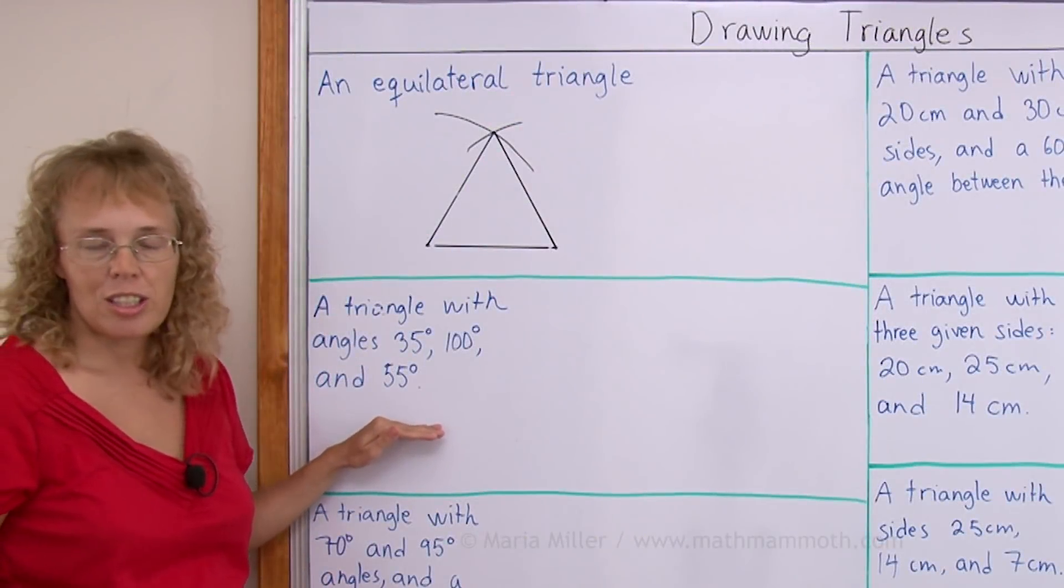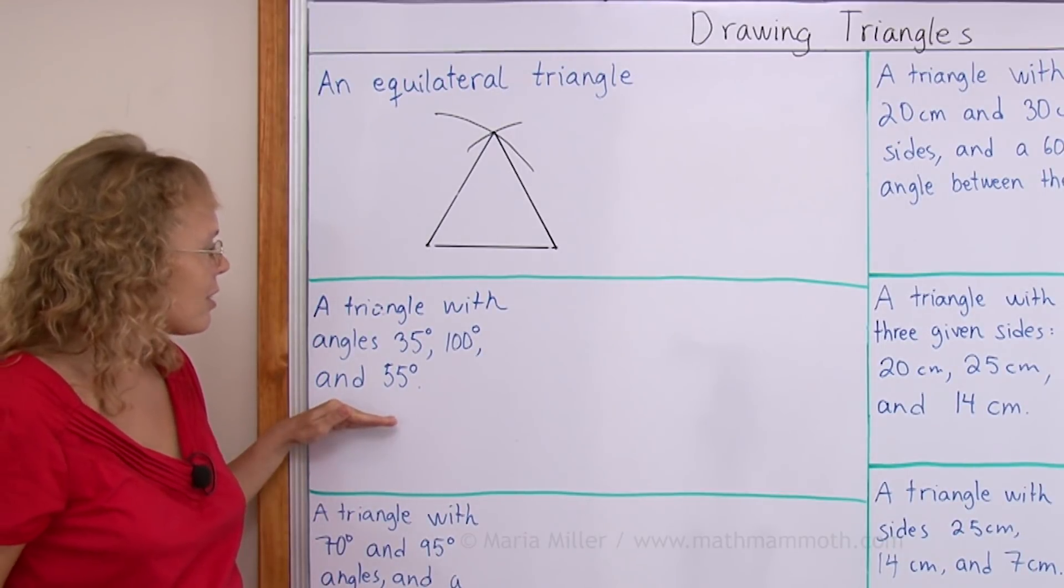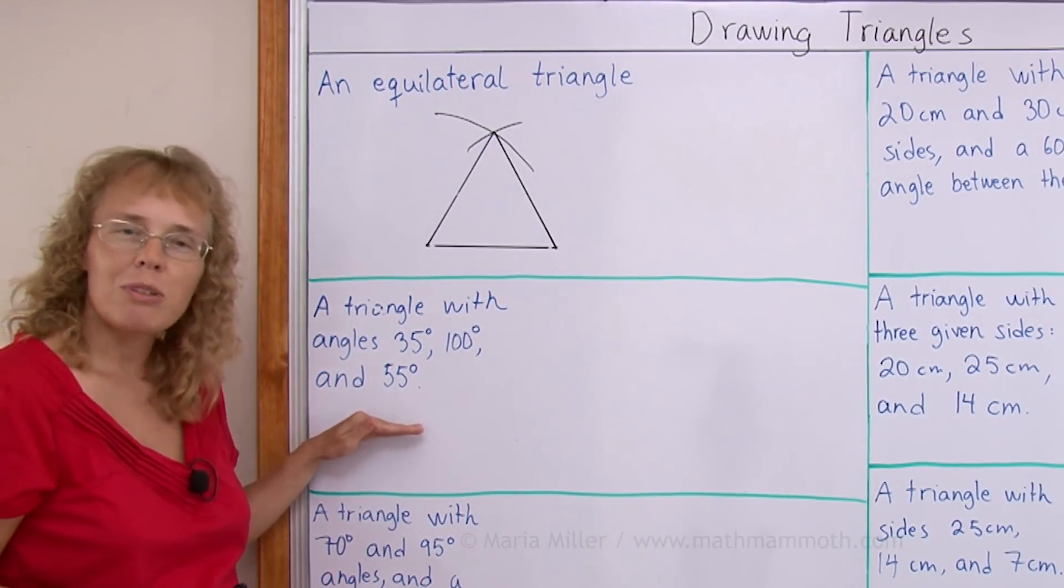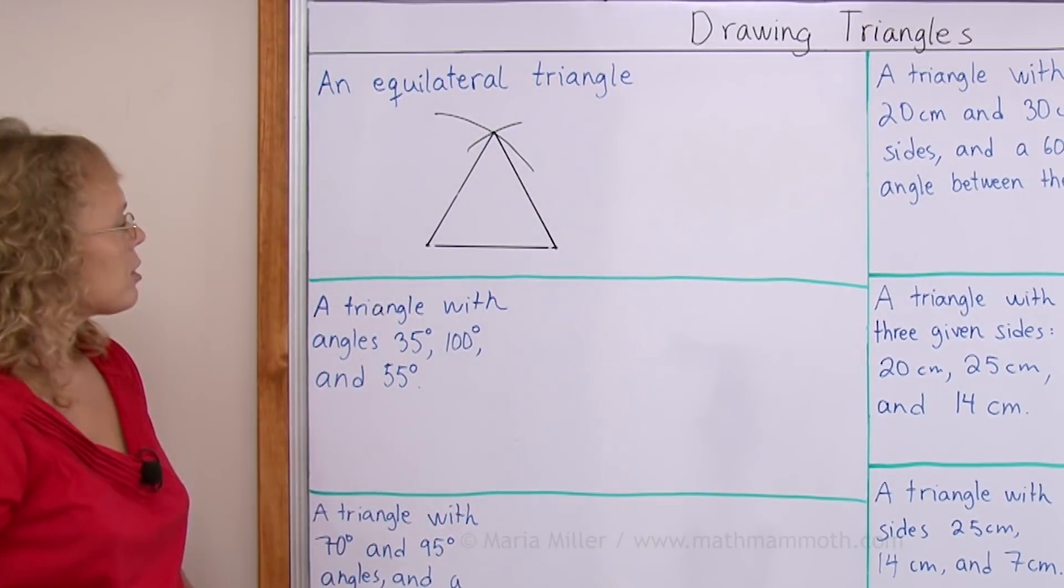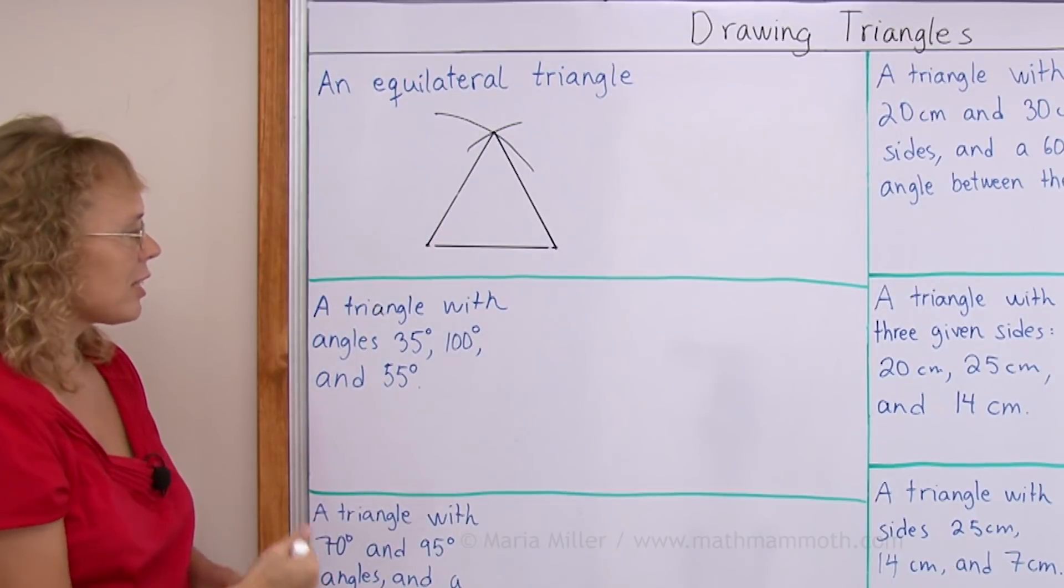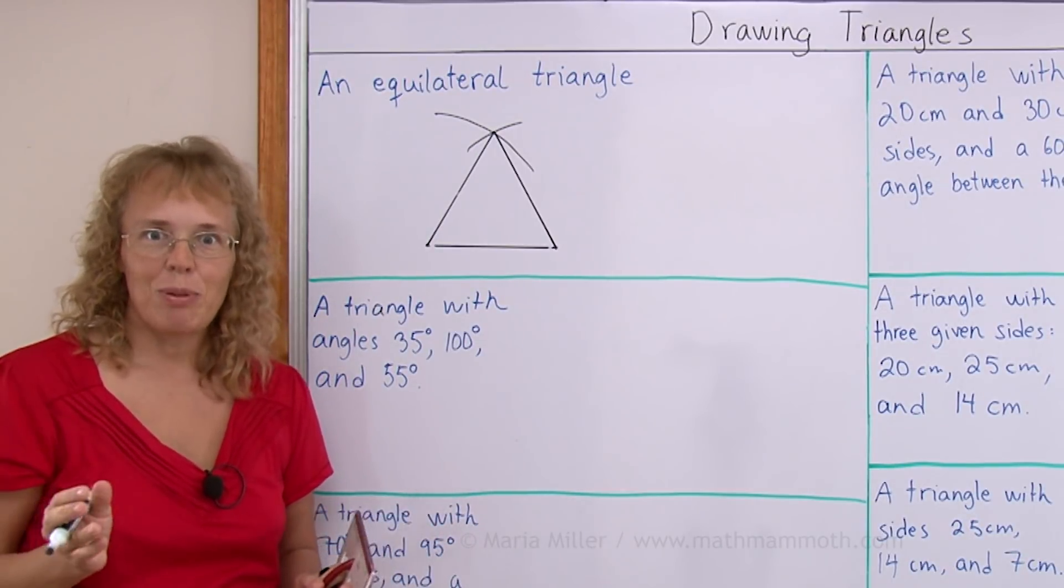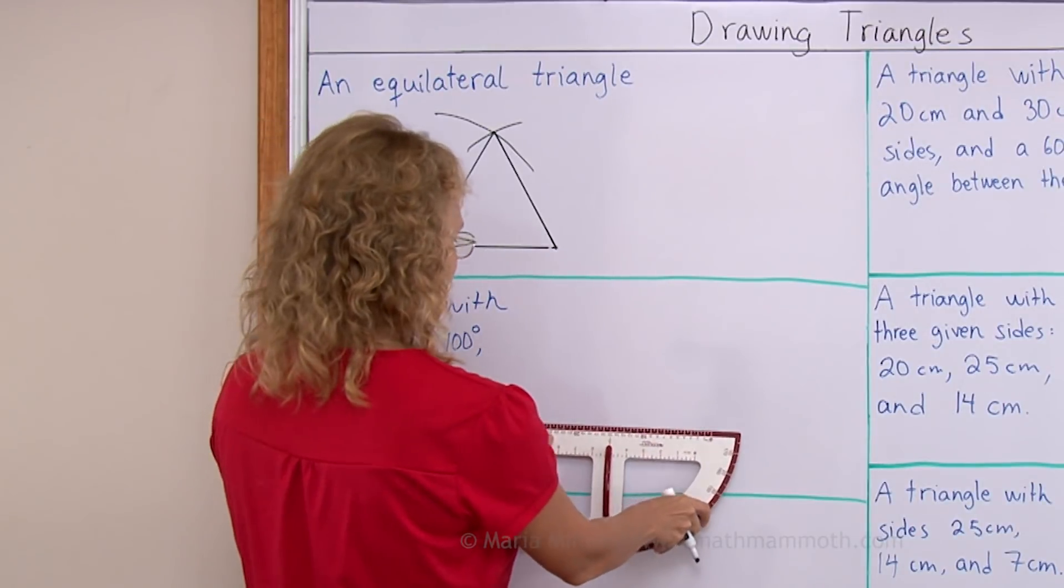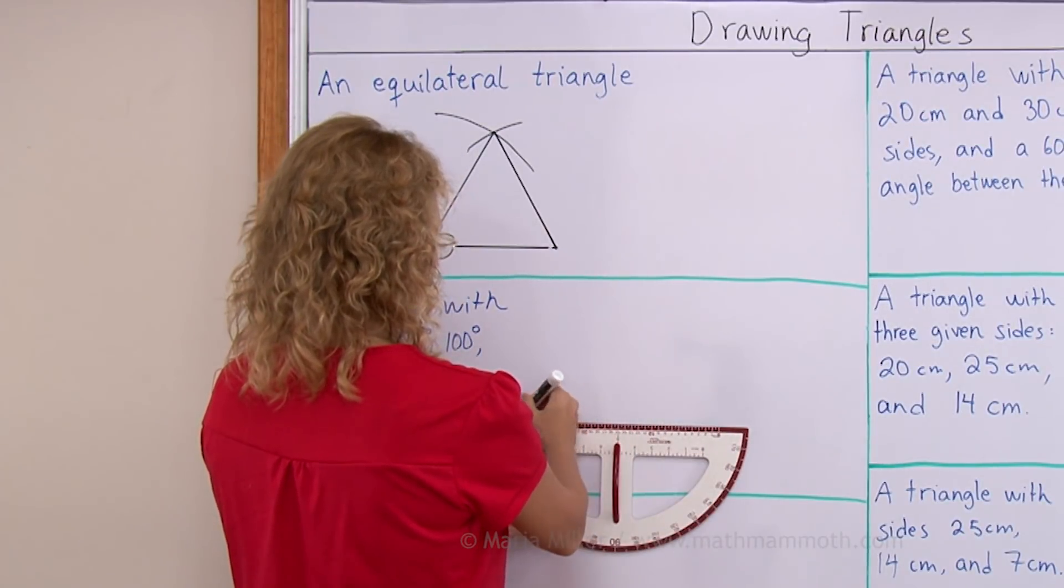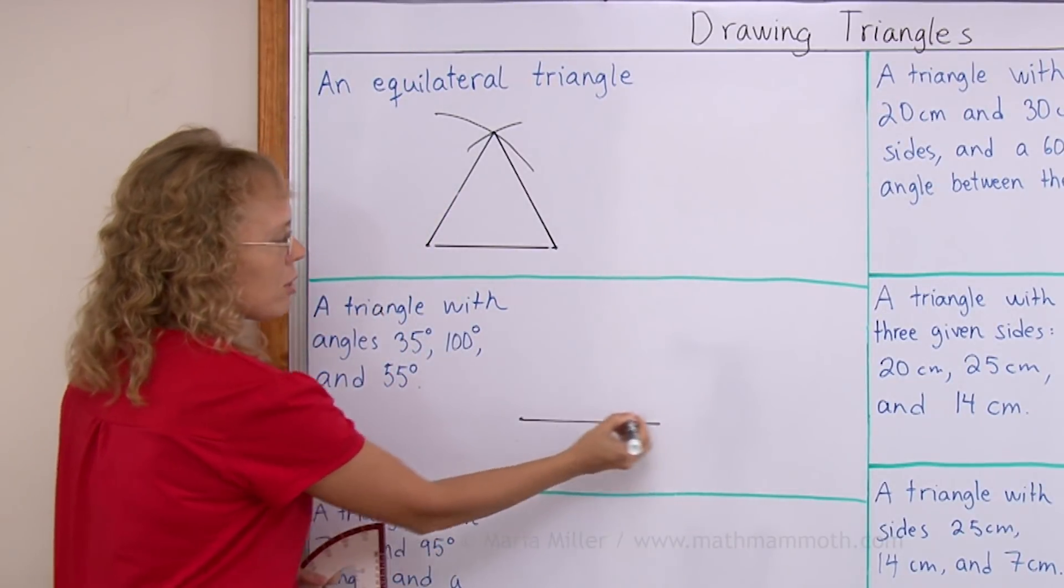Here's some information that we're going to use to draw a triangle. But there's also the question, can we draw only one triangle with this information or can we draw several different? A triangle with angles 35 degrees, 100 degrees and 55 degrees. As you notice it doesn't tell us anything about the side length. So again I can just choose any length for, for example, this one side here, the bottom side.